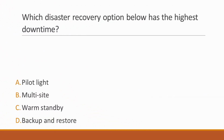Next question: Which disaster recovery option has the highest downtime? Options: A. Pilot Light, B. Multi-site, C. Warm Standby, D. Backup and Restore. Correct answer is option D, Backup and Restore, because since most environments backup data to tape and then send the tapes off-site, it can take a longer time to restore your systems.